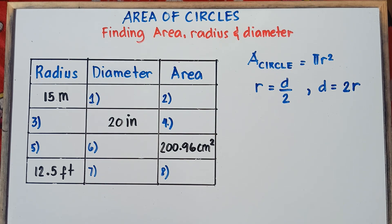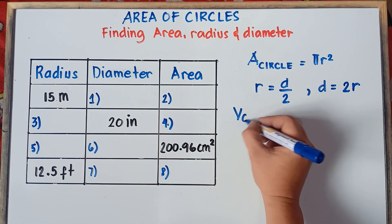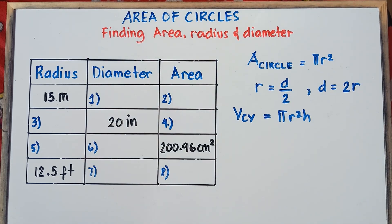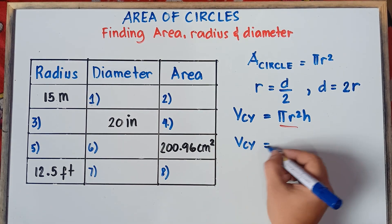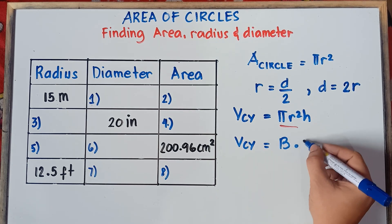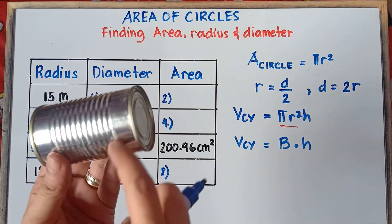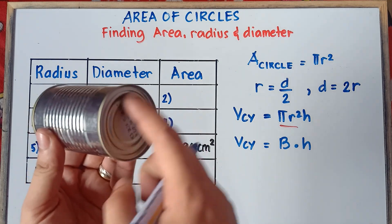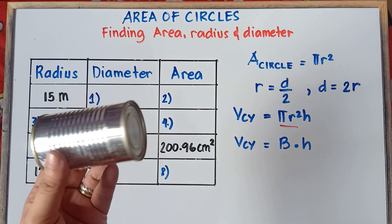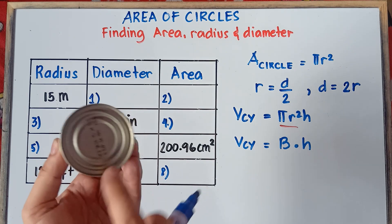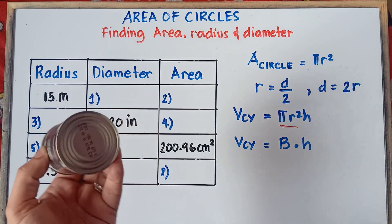We need to master the area of circles because in finding the volume of a cylinder, the formula would be pi r squared times height. Now this pi r squared came from the area of the base. So therefore, we can say that the volume of a cylinder is equal to the area of the base times the height.